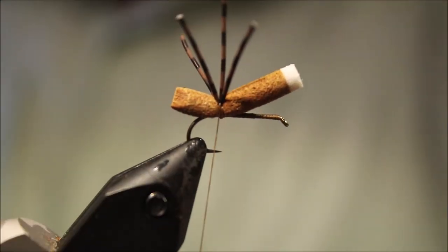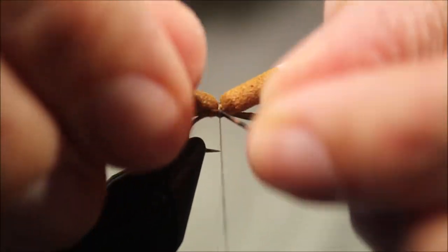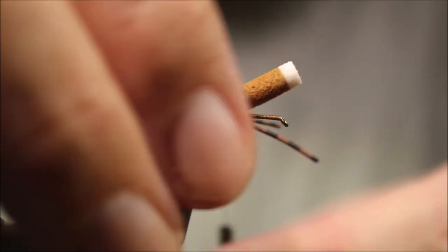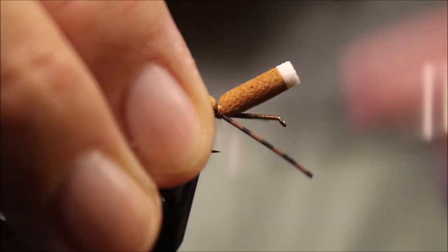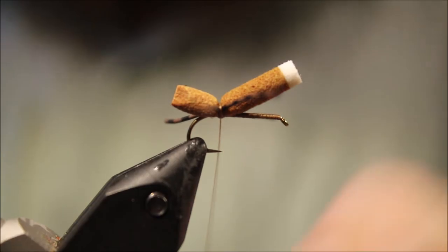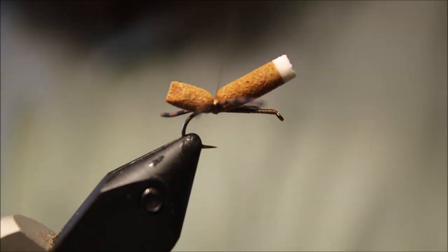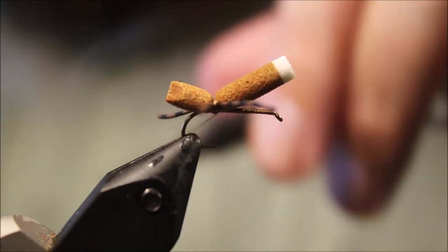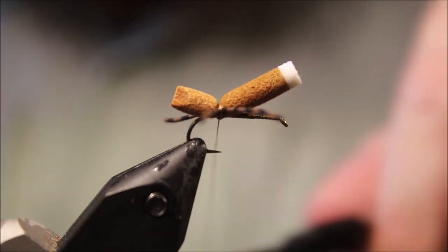Take two wraps just to hold them, position them on the side, and take two or three more wraps, a few more wraps just to get the legs to sort of sit.